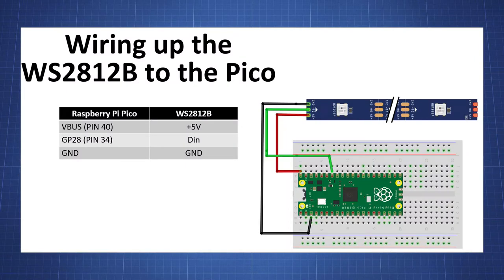The wiring is straightforward. You connect the 5V of the LED strip to the VBUS, connect the data pin of the LED strip to GP28 or any other GPIO pin, and connect the ground of the LED strip to the ground of the Pico.